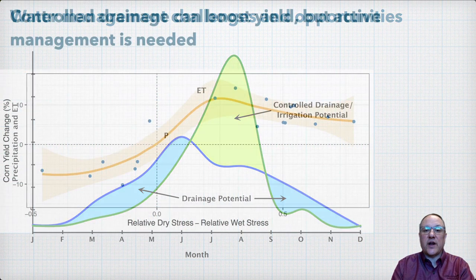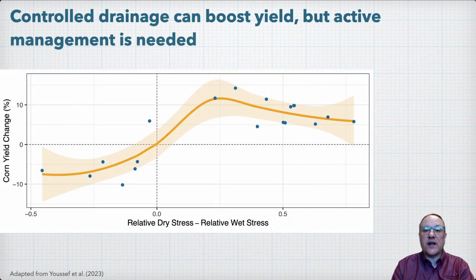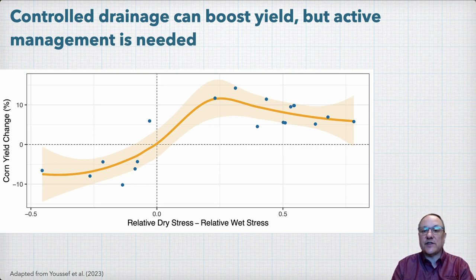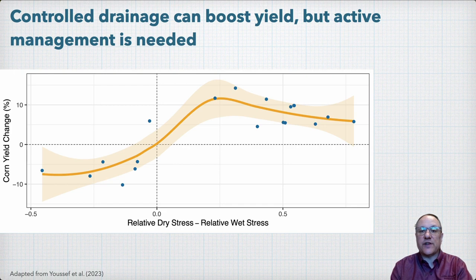Another synthesis study of controlled drainage impacts on corn yield from the Transforming Drainage Project shows that in drier years, controlled drainage can boost yields. The figure shown here has an x-axis representing the difference in dry and wet stress indices — values greater than zero are drier conditions, and values less than zero are wetter conditions — and the y-axis is the change in corn yield as a percent. In drier years, results showed corn yield increases of 5 to 10 percent from controlled drainage compared to conventional drainage. In wetter years, there can be a yield decrease from added wet stress.